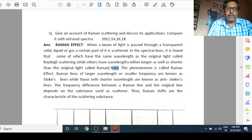But we also observe that we get lines either longer as well as shorter than the original light. These are Raman lines. The lines whose wavelength is same as the original light, called Rayleigh scattering. And the lines whose wavelength is either longer or shorter, is called Raman lines. And the phenomenon of the change in wavelength of lines passing through the transparent material is known as Raman effect.